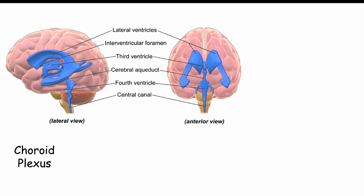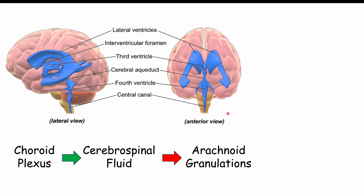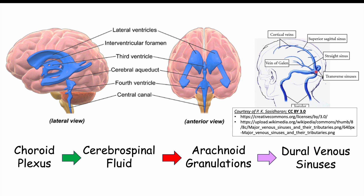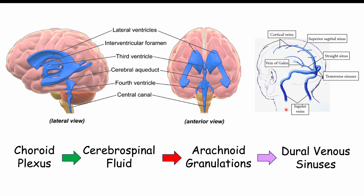More specifically, the lateral, third, and fourth ventricles contain the choroid plexus — cells that line the inside of the ventricles and produce cerebrospinal fluid. These are ependymal cells, a type of glial cell. The CSF flows through the ventricles and subarachnoid space and is eventually reabsorbed by arachnoid granulations inside the subarachnoid space. That absorbed CSF then enters dural venous sinuses, which are large veins that connect to the jugular veins. This is how cerebrospinal fluid is recycled.